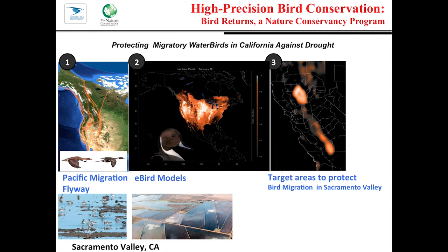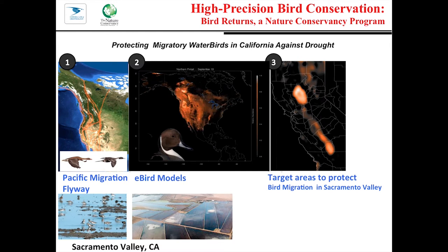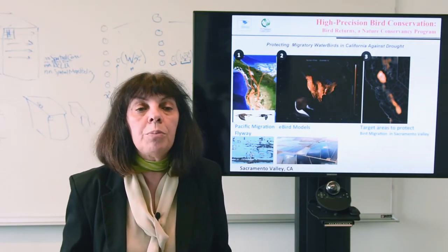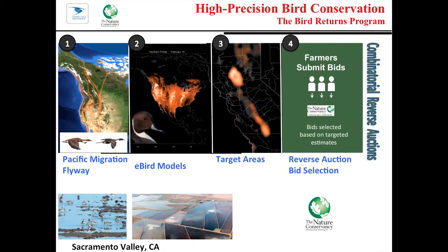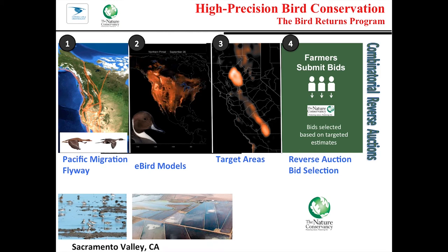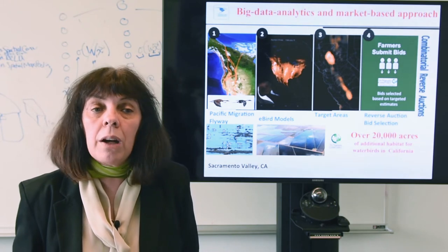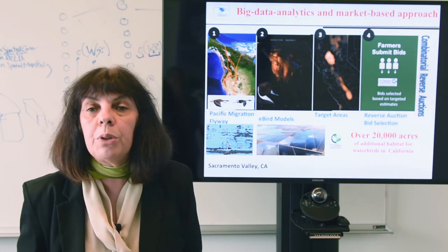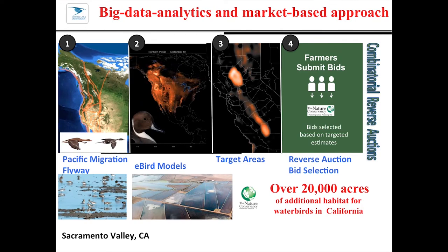A good example of high-precision conservation is Bird Returns, a program of the Nature Conservancy, with the goal of protecting migratory water birds in California against the drought. The eBird models identify the target areas of bird migration in Sacramento Valley, which are provided to the Nature Conservancy. Farmers submit bids to keep the target rice fields flooded in order to provide habitat for the birds during migration. This big data, analytics, and market-based approach has generated over 20,000 acres of additional habitat for water birds in California — a radically novel way of doing bird conservation.